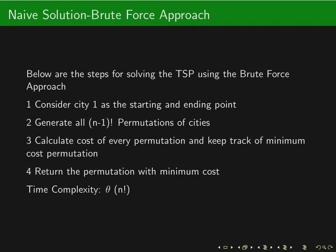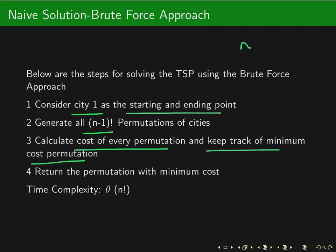Now let us understand how to solve the TSP problem using a brute force approach. Suppose we have n cities and consider city one as both the starting and ending point. We can generate n minus one permutations of cities, calculate the cost of every permutation, keep track of the minimum cost permutation, and return it. Since we have to calculate (n−1)! permutations, the time complexity will be of the order of Θ(n!).